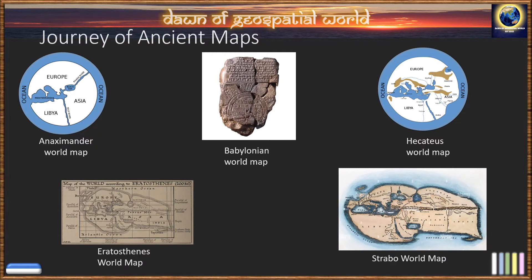Eratosthenes' world map was based on his book known as Geographica. These ancient age maps are based on explorer observations and mathematical calculations.